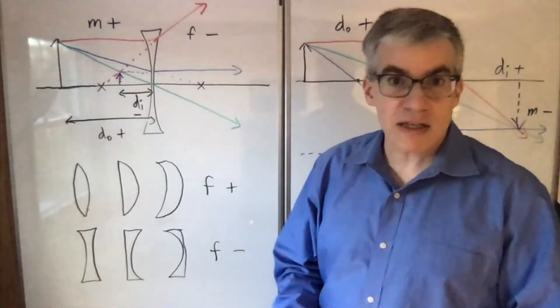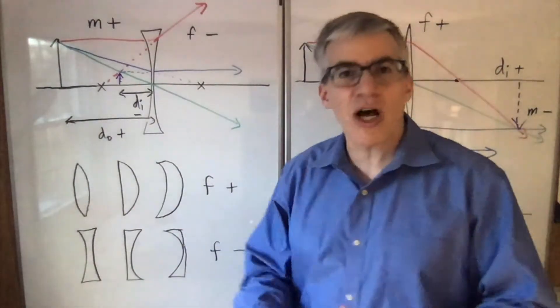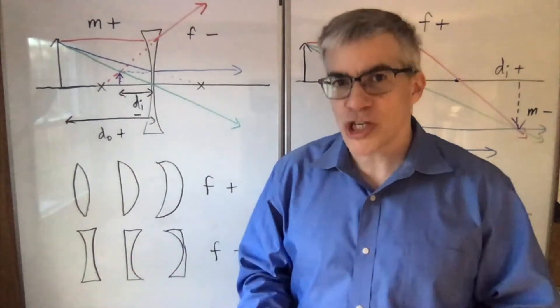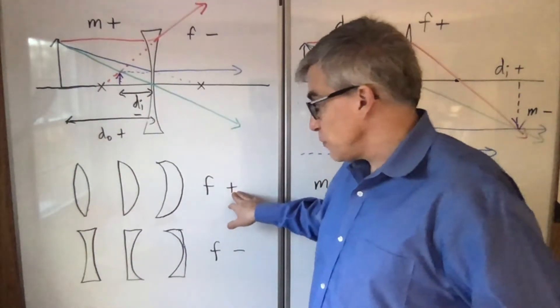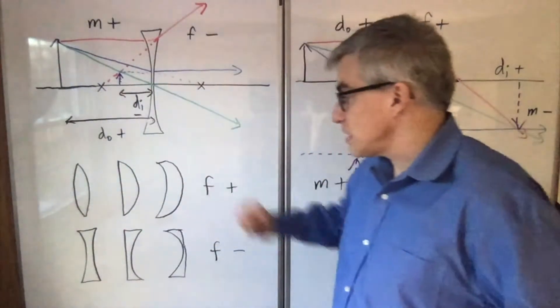They may have said convex is positive. Not necessarily. Convex is shape. Converging is what a lens does. Converging lenses have positive focal length, and they're thicker in the middle. That's how you can tell.